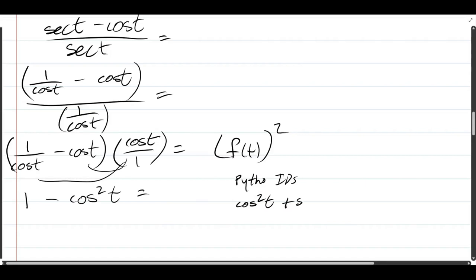So it's cos squared plus sine squared equals 1. And you want to solve for 1 minus cos squared. So you're going to subtract the cos squared to the other side, and then you can make this substitution.